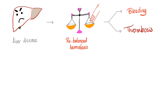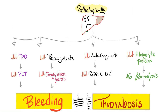What do we call this condition? AICF — Accelerated Intravascular Coagulation and Fibrinolysis. With liver failure: no TPO means no platelets, causing thrombocytopenia and bleeding; no coagulation factors means bleeding; no anticoagulants like protein C and S means thrombosis; no fibrinolytic proteins means the clot stays and thrombosis worsens. Both bleeding and thrombosis can happen together — this is AICF.